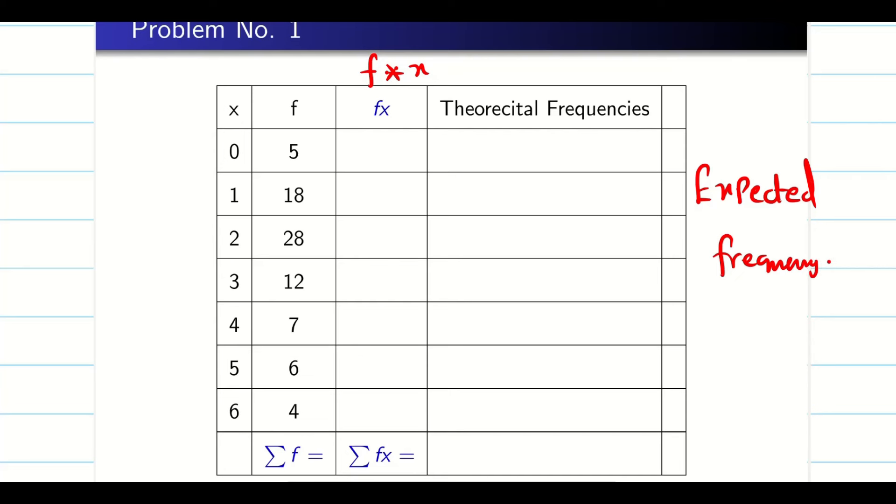Now using binomial, I will get the probability. Now this is for one data. Now how many data I have? I have capital N. Capital N is what? It is nothing but sum of your frequency. Now if I multiply this probability with sum of my frequencies, it will give the expected theoretical frequencies. That's it guys.